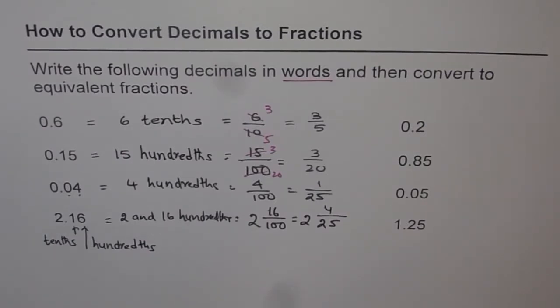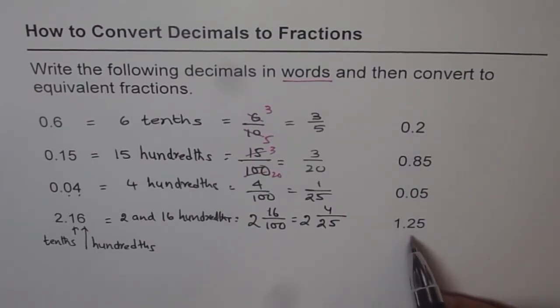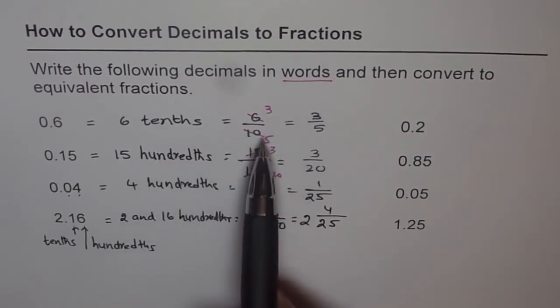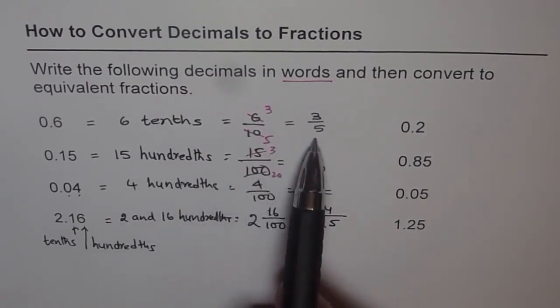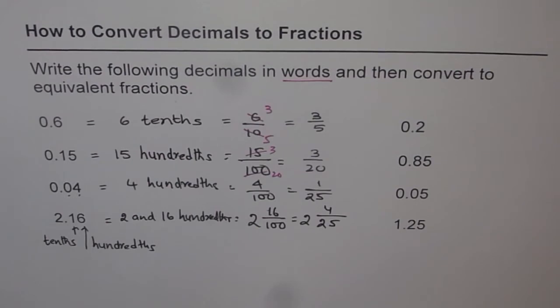Isn't that simple? So read and write. That is for you to do. So copy these questions: 0.2, 0.85, 0.05, 1.25. Write them in words first, and then fractions, and then the lowest term. It will be an excellent exercise for you to do. Thank you.